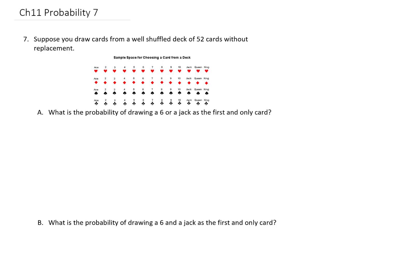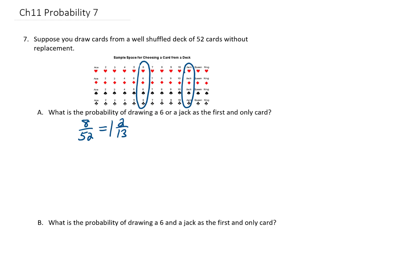We're going to draw cards from a well-shuffled deck of 52 without replacement. What is the probability of drawing a 6 or a jack as the first and only card that you draw? One way to do this problem is just to look at the number of 6s and the number of jacks in the deck and add them together. We have 8 cards that are either a 6 or a jack out of 52 total. That fraction reduces to 2 thirteenths, which is a great answer.